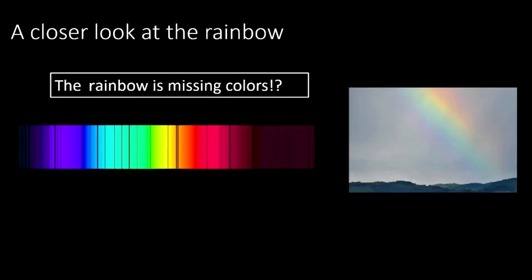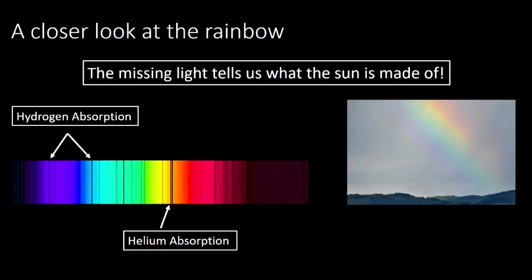If we take a really close look at the rainbow, the rainbow is missing colors. Scientists can do this with an instrument called a spectrometer. You'll see these dark lines. You see these dark lines right here? That's telling us there's no light there. So we should see this nice smooth spectrum all the way from red to violet. And instead, we see gaps in our rainbow. What in the world is going on? Well, those gaps come from absorbed light.